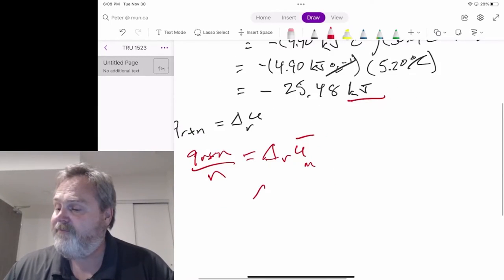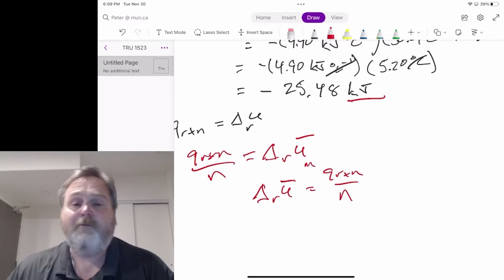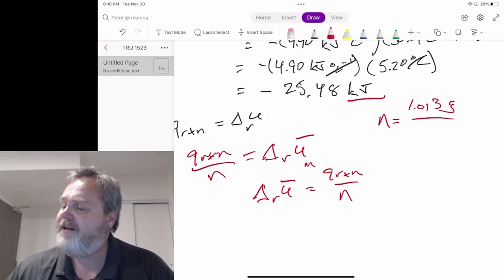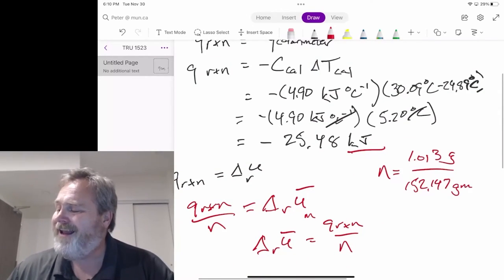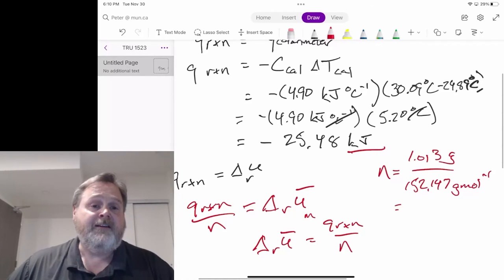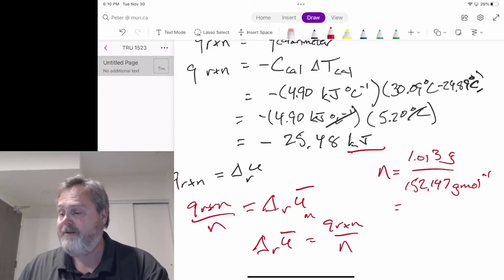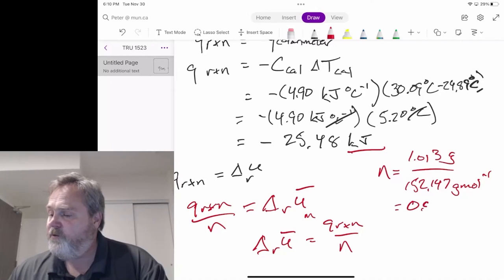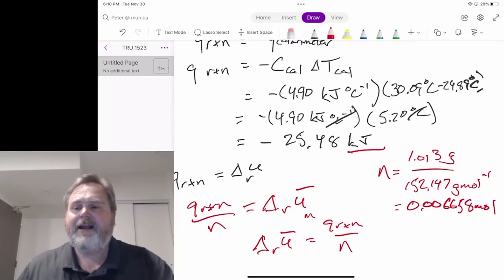Which means that for us, delta Ru bar equals the Q reaction we actually calculated, divided by the number of moles of vanillin we had. Well, we've got to figure out what that number of moles of vanillin was. It's the 1.013 grams of vanillin we had, divided by its molar mass of 152.147 grams per mole. Again, chemist toolbox calculation. You really should be at a point where you know how to do this and when it's kind of needed. 1.013 divided by 152.147. And we're going to see that instead of burning one mole of vanillin, we actually burned about 0.006658 moles. And again, I'm not worrying about sig figs until the end. I'll kind of figure out at the end where that goes.